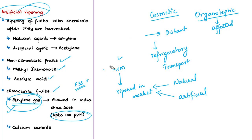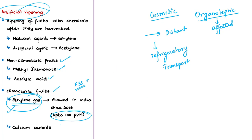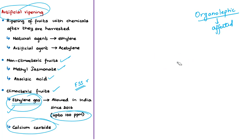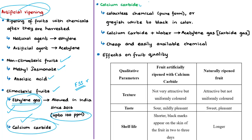However, there is another chemical that makes the headlines — calcium carbide. It is the most commonly illegally used chemical for ripening of climacteric fruits. Examples of fruits where calcium carbide is used include mango, banana, papaya, sapota, dates, and tomatoes. Calcium carbide is a colorless chemical in its pure form, otherwise grayish white to black in color, with a garlic-like odor. When it reacts with water, calcium carbide produces acetylene gas, also called carbide gas. This acetylene gas is similar to ethylene gas and quickens the ripening process.